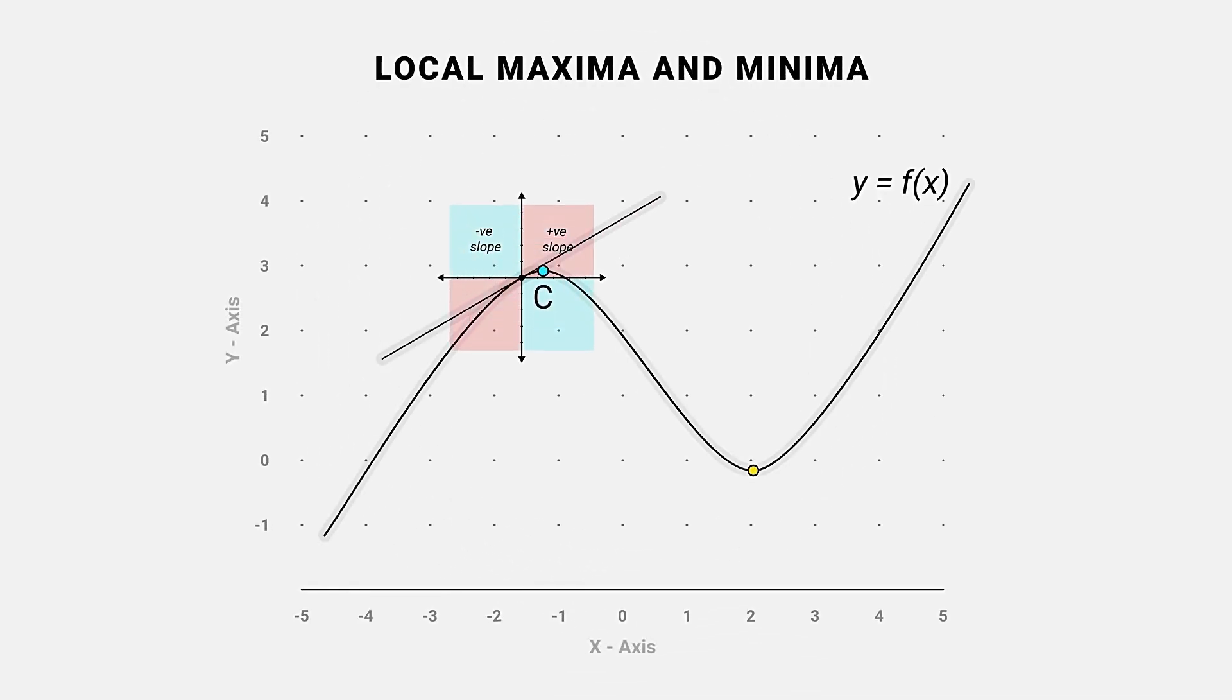If slope of f of x changes from positive to negative at c, then f of x has a local maximum value at c.